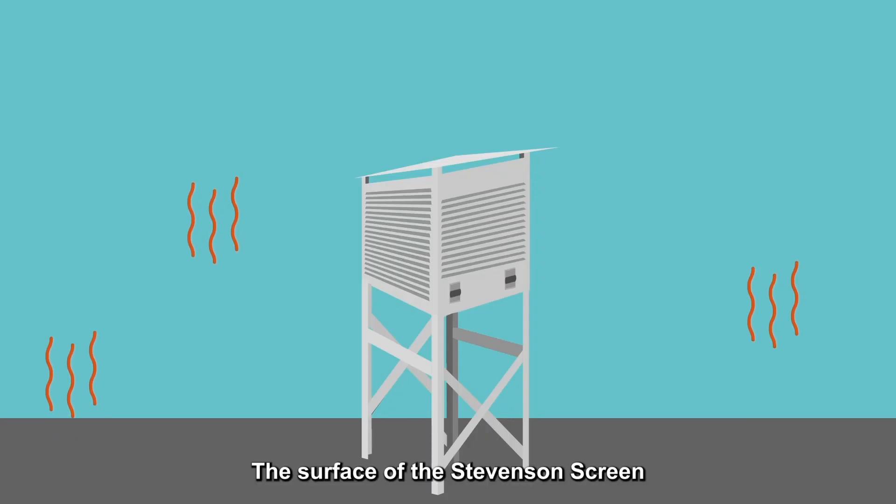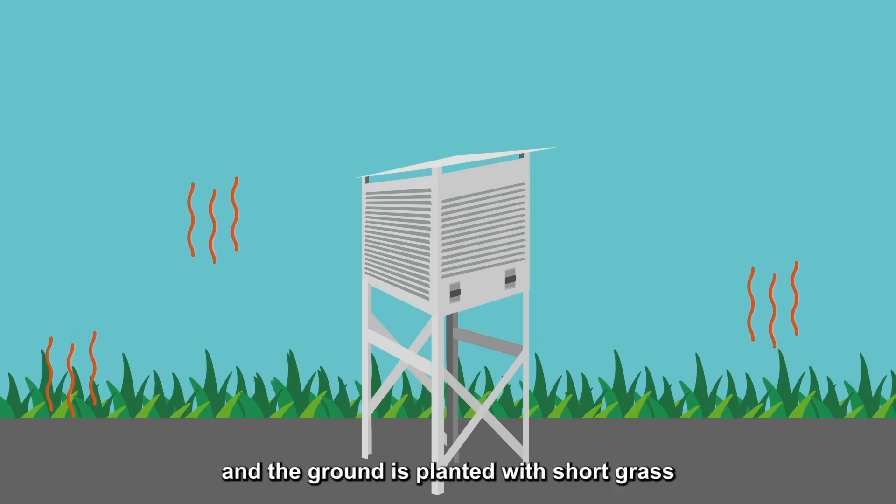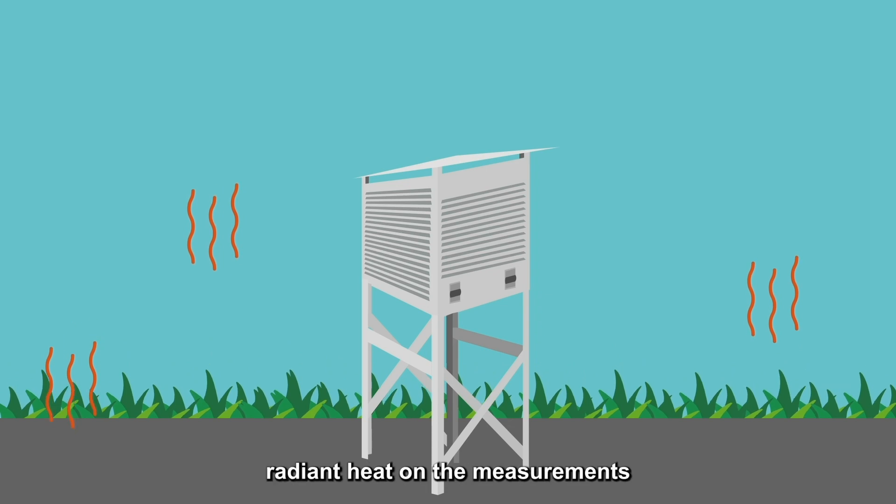The surface of the Stevenson screen is also deliberately painted white, and the ground is planted with short grass to reduce the influence of radiant heat on the measurements.